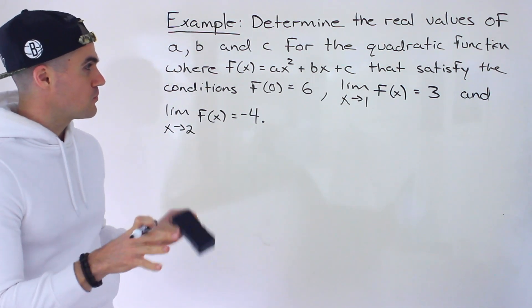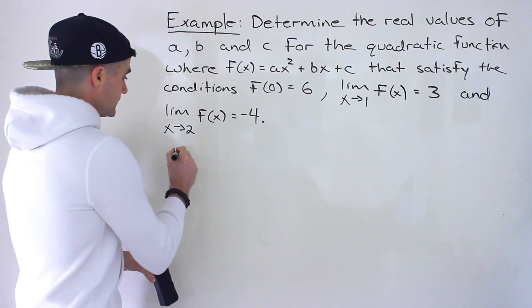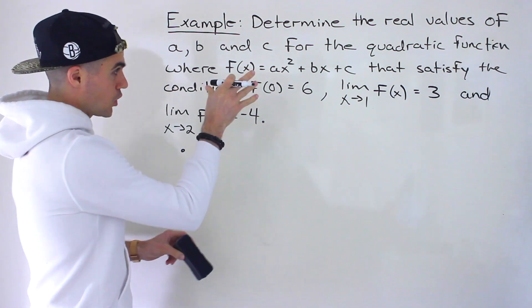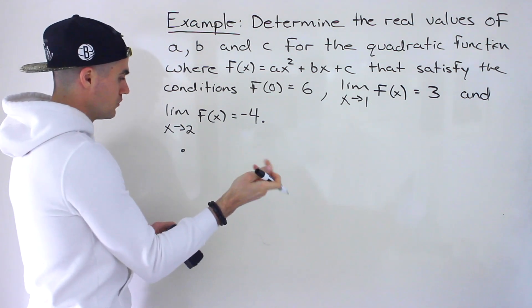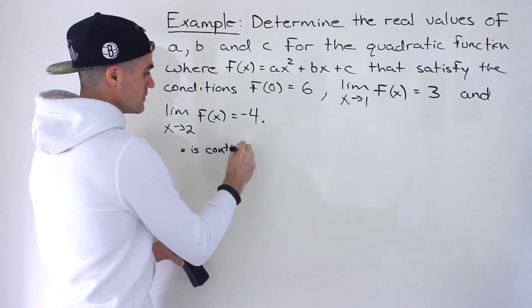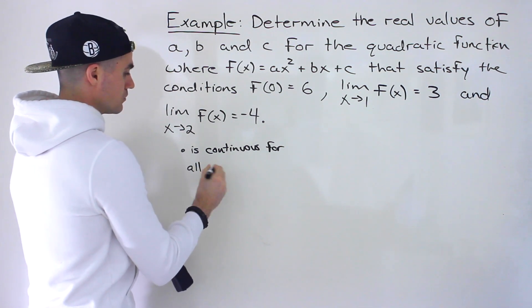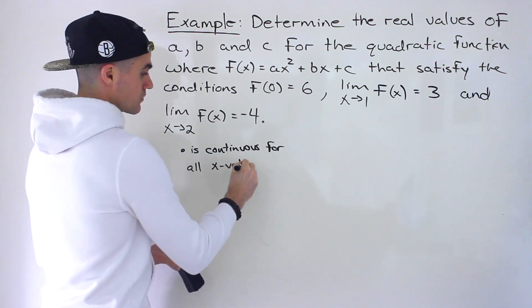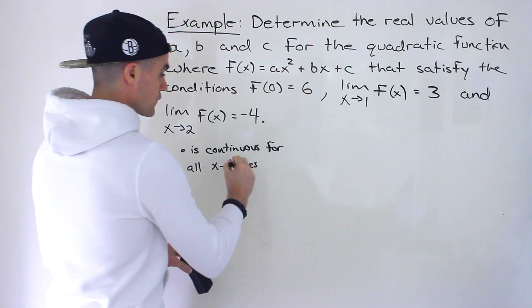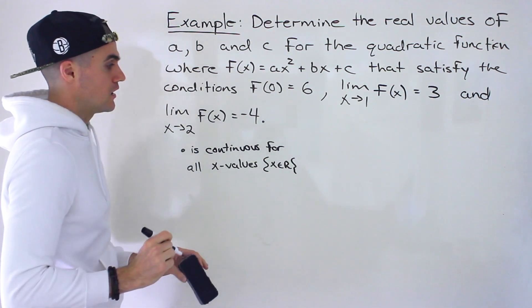This question is actually not too bad. It looks a little more complex because we have these limits here. But one thing I want to mention: because we're working with a quadratic — any quadratic or any polynomial for that matter — it is continuous for all x values, from negative infinity to positive infinity, for all real numbers.